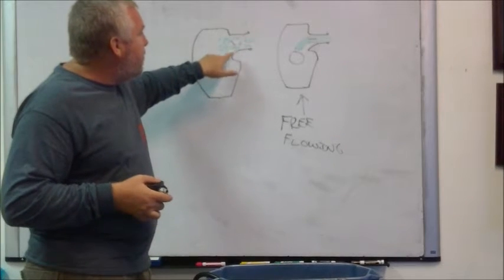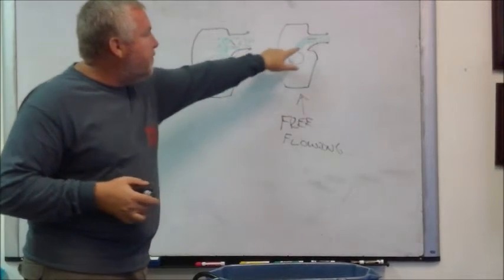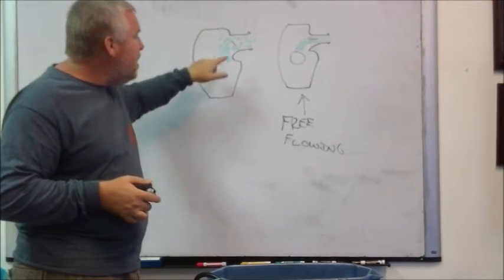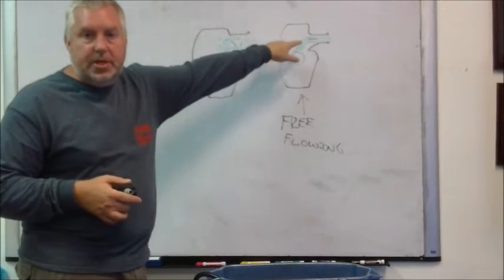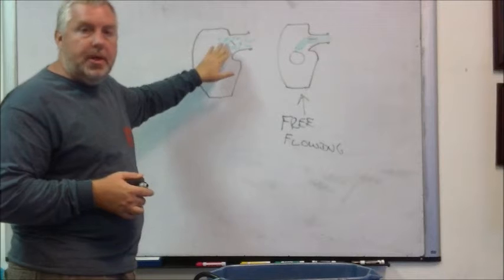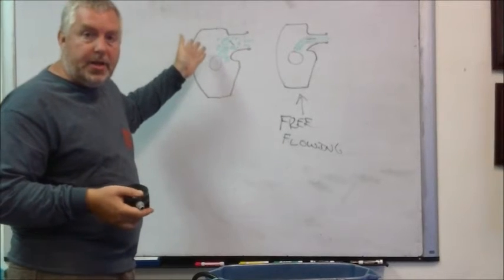Well, inside a high-performance regulator, there's a little flow vein, and I'm pointing to it right here. I'll show you it in a second. That flow vein has two positions. It has the slope position, which causes a little bit of turbulence and backflow and prevents a regulator from free-flowing.